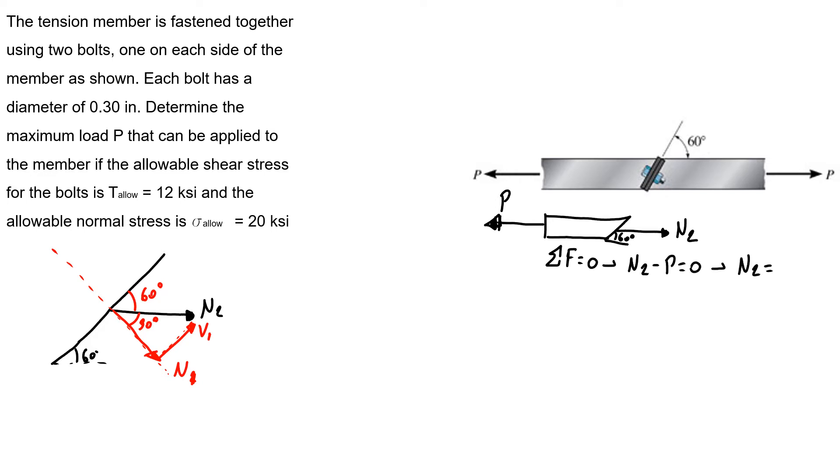So now we know that N1 is the same as N2 times cosine of 30. So N1 will be P times cosine of 30. And V1 is N2 times sine of 30, so V1 equals P times sine of 30.